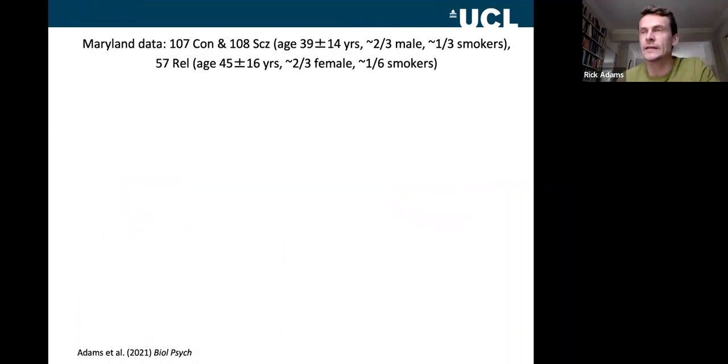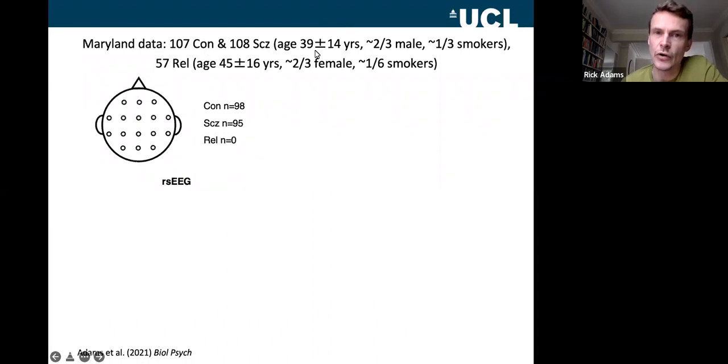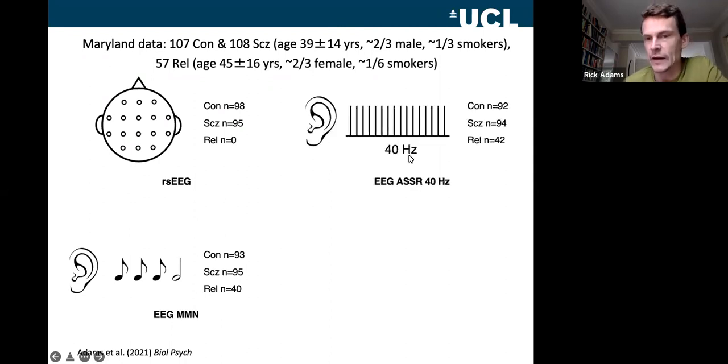Now the data that we're fitting these models to was collected over a number of years in Maryland by Elliot Hong. And he had a fairly large sample of about a hundred controls and a hundred patients with a schizophrenia diagnosis who underwent a variety of paradigms. So one was a simple resting state EEG, one was a mismatch negativity, this auditory oddball paradigm where subjects hear sequences of short tones and then a deviant long tone. Another paradigm is known as the auditory steady state response paradigm at 40 hertz, which is essentially just listening to a click train played at 40 hertz over and over and over again. And lastly, resting state fMRI.